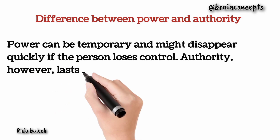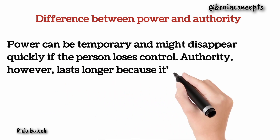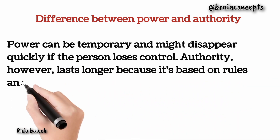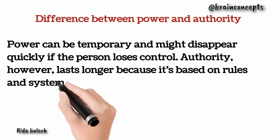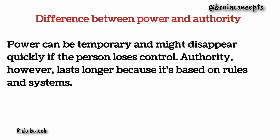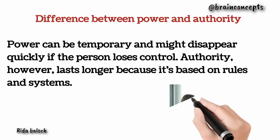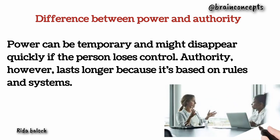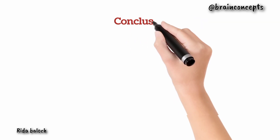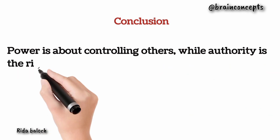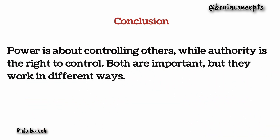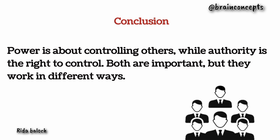Power can be temporary and might disappear quickly if the person loses control, while authority lasts longer because it is based on rules and an established system. To sum up, power is about controlling others while authority is the right to control. Both are important but they work in very different ways.